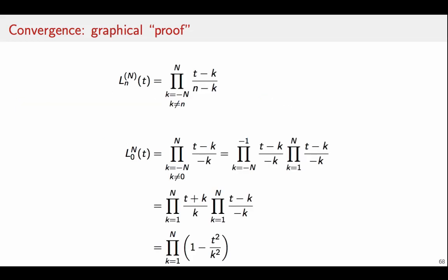We can also be very pragmatic and look at the convergence from the numerical point of view. So we take the definition of the arbitrary Lagrange polynomial of order n, let's take the Lagrange polynomial number zero, and if we manipulate the definition, it's very easy to obtain this representation, it's a product for k that goes from 1 to capital N of 1 minus t-squared over k-squared. Now this is very easy to compute.